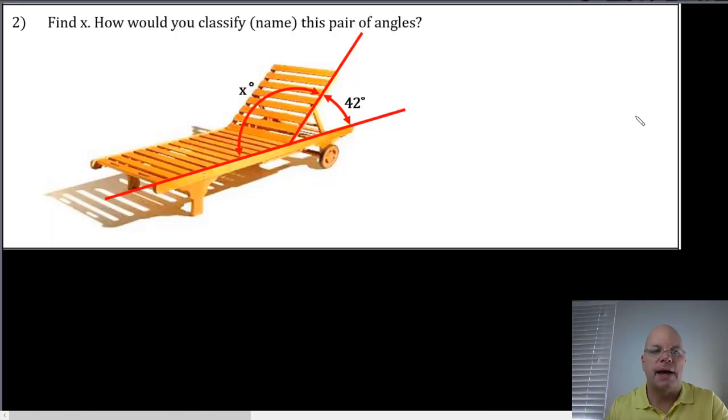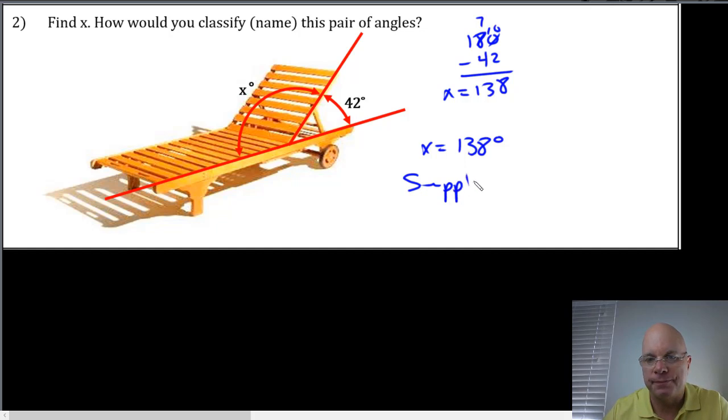Problem number two, find X. We see that we have two adjacent angles, the 42 degree angle and X. So we have this acute angle and this obtuse angle. They're adjacent and they form this line, this straight angle. So these angles are supplementary, so we know they have to add up to 180. So we can do 180 minus 42 to find X. X will equal this difference, which is 138. Add these back up, 178, 180, yes. So X equals 138 degrees, and these are supplementary angles.